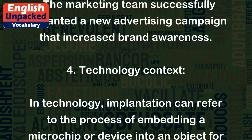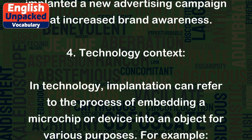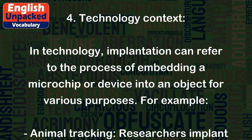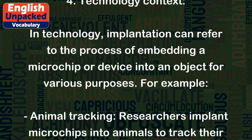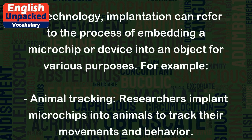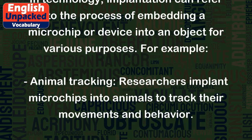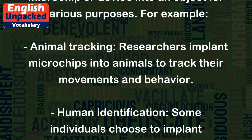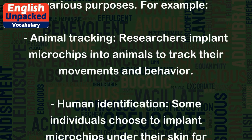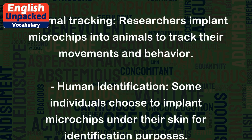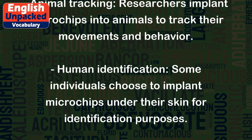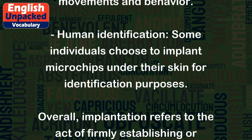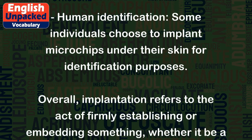In technology, implantation can refer to the process of embedding a microchip or device into an object for various purposes. For example, in animal tracking, researchers implant microchips into animals to track their movements and behavior. Some individuals also choose to implant microchips under their skin for identification purposes.